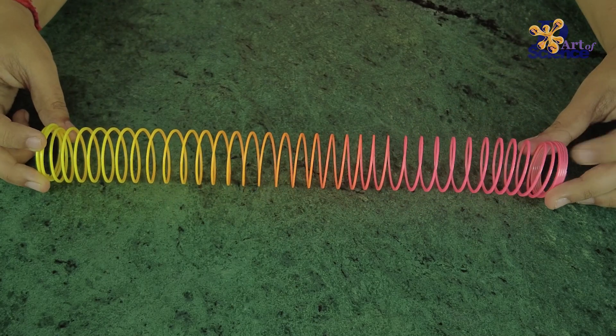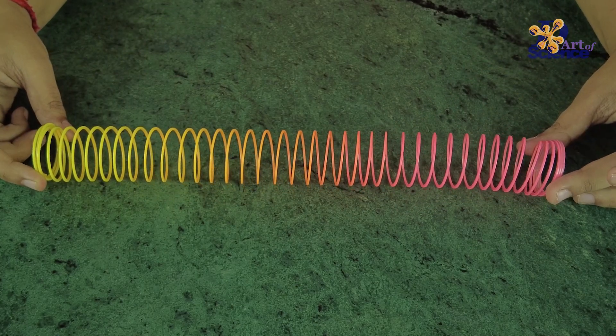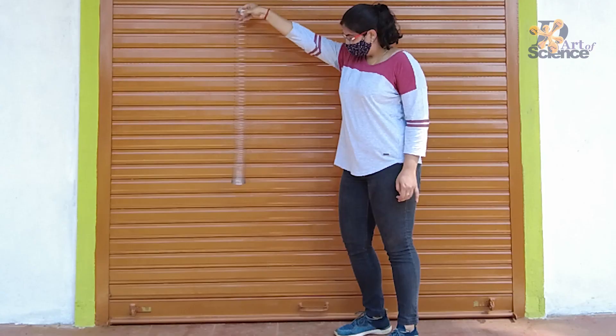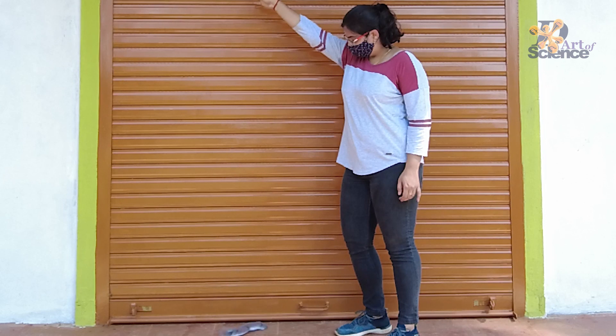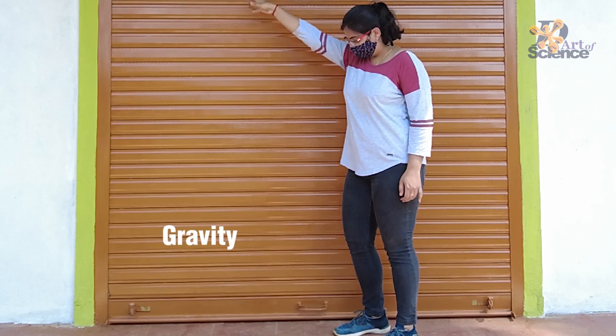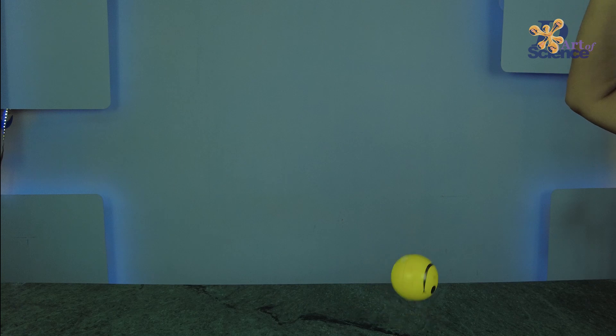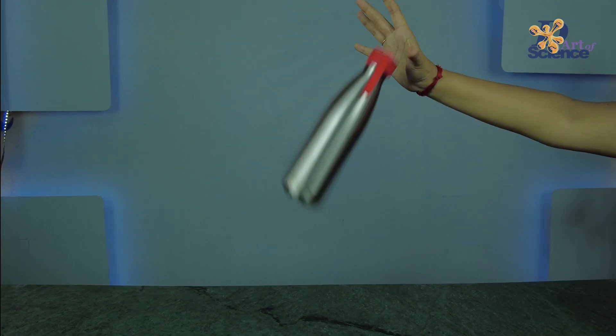Now let's go back to understanding the slinky fall. One of the main reasons why the slinky falls the way it does is because of gravity. Gravity as we know is the force of attraction that pulls all objects towards the earth's surface.